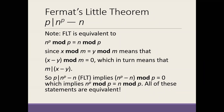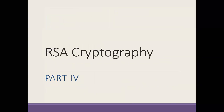Remember that obnoxious example on Wolfram Alpha where I took a massive number and raised it to the 37th power? We saw that it had the same remainder upon division by 37 as the number not raised to the 37th power. And believe it or not, that's going to be critical to what we're going to talk about next, which is RSA cryptography.